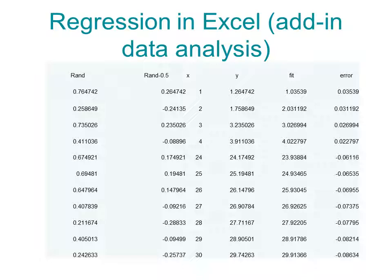So, here is an example. You need the add-in data analysis to be able to do that. I first generated the noise with the RAND function, which has noise between 0 and 1. Subtract 0.5 to get the average to be 0. Add it to the function Y equal to X. Do the fit and calculate the errors. And you see that, for example, for X equal to 1, the error is 0.035, while the noise was about 10 times bigger at 0.26.